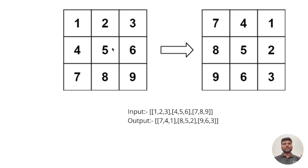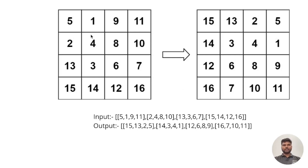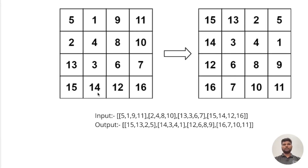It's a 2D array with the first row as 1 2 3, the second row as 4 5 6, the third row as 7 8 9. After rotating 90 degrees you get the first row as 7 4 1, the second row as 8 5 2, and the third row as 9 6 3. Here is another bigger example where the results are similar — each row becomes 90 degrees rotated and becomes a column.